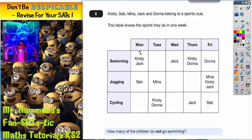So if we have a quick look at the table, we've got the days of the week across the top, Monday to Friday, down the side we've got the activities that we do: swimming, jogging and cycling.